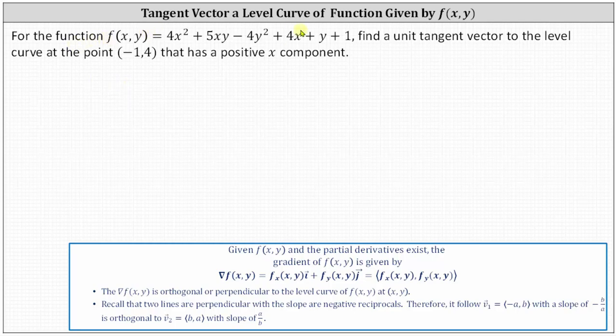For the function f of x comma y, find a unit tangent vector to the level curve at the point negative one comma four that has a positive x component.